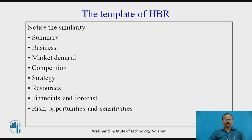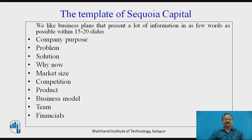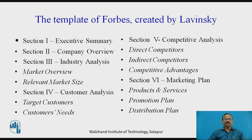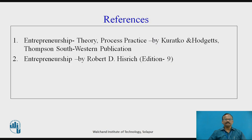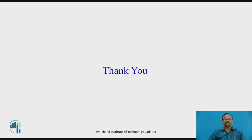This is the template of the Harvard Business Review — notice the similarity: Summary, Business, Market Demand, Competition, Strategy, Resources, Financial and Forecast, Risk, Opportunities, and Sensitivities. Similarly, this is a template of Square Capital with 15 to 20 slides — you can have a template like this. This is the template for Forbes, created by Lewinsky. Pause the video and go through the templates. These are the references used to create this video. Thank you.